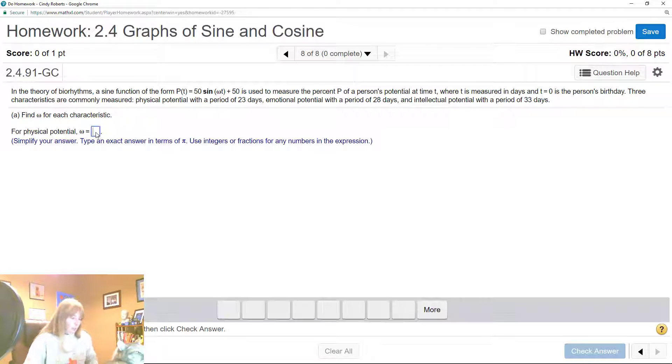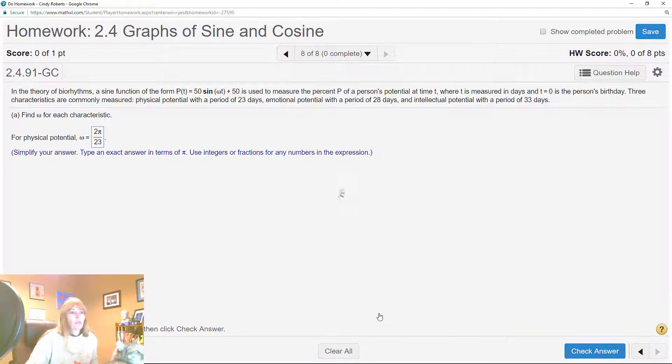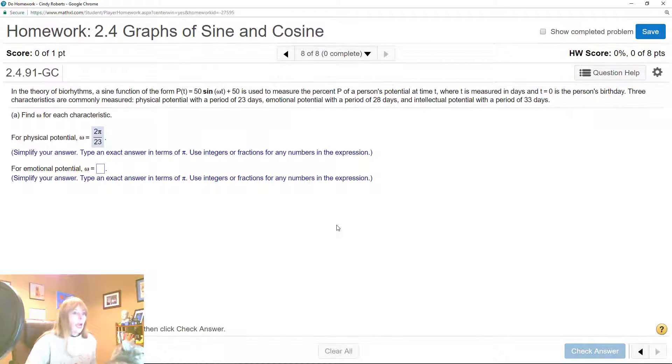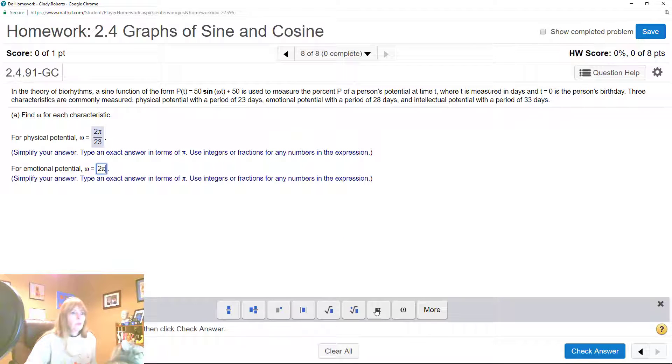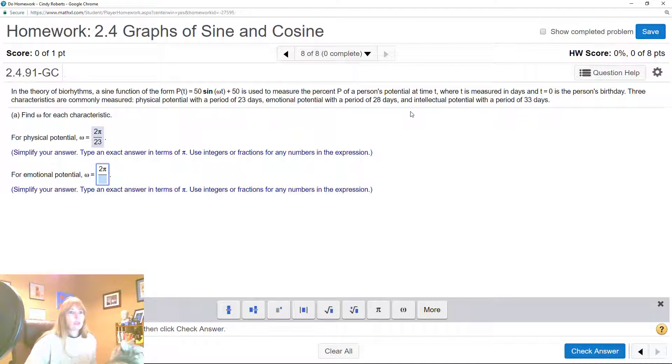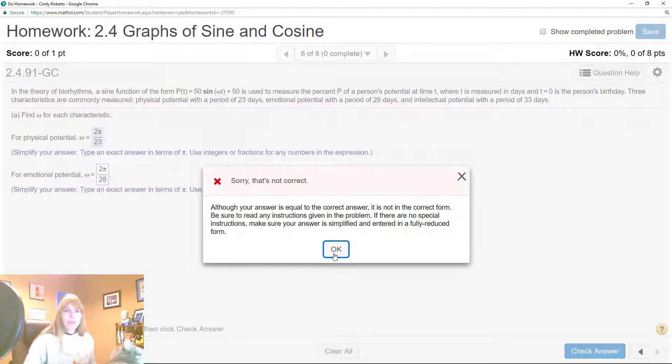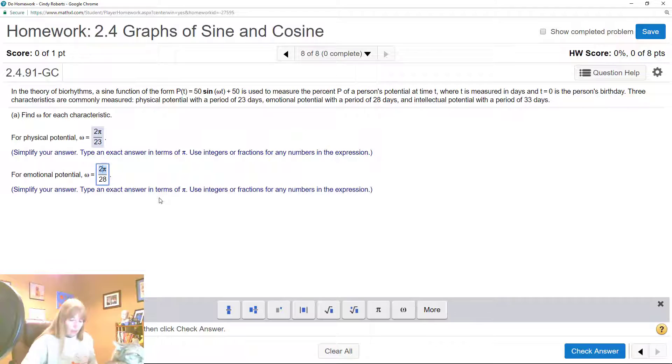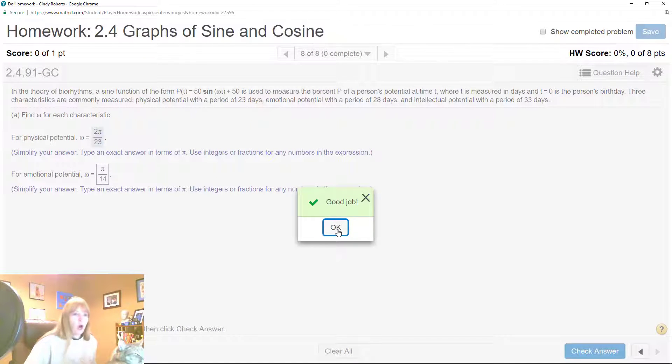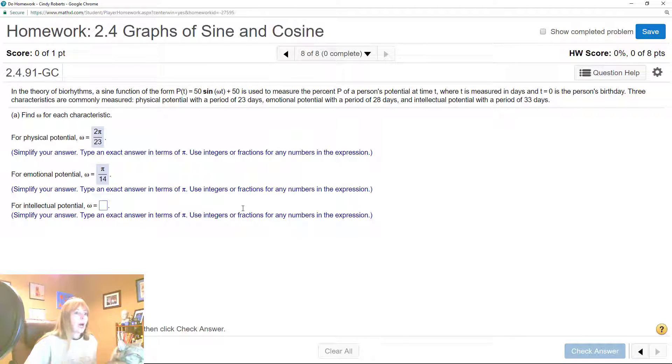Fantastic. And the next one will be 2π over emotion, no 28. Oh, I kind of forgot to reduce the fraction. Divide the top and the bottom by 2, hello, 14. Stop laughing, all right, teach you got one wrong. Well, one wrong but good job.